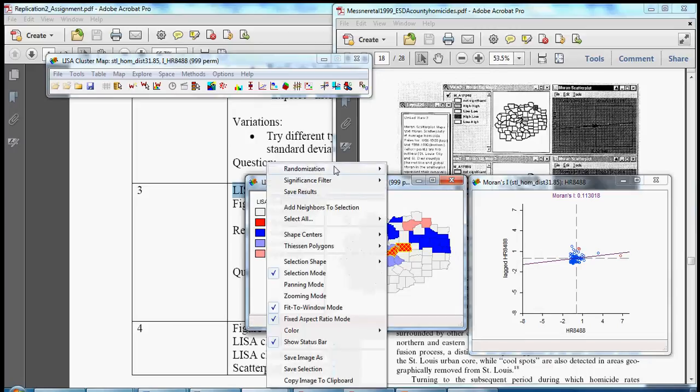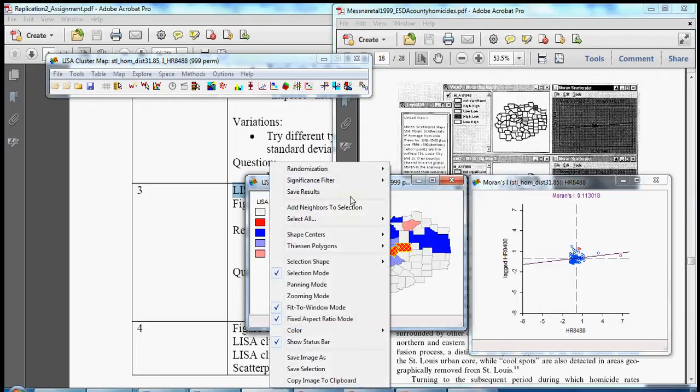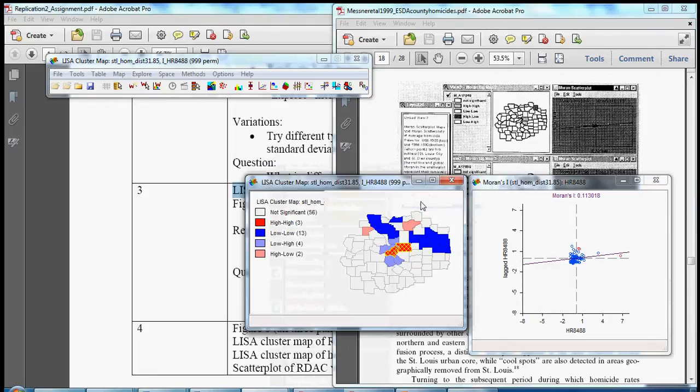If we did randomization again 999 times or a thousand times, just kept running this, it's conceivable that we might get slightly different results, but we're in the ballpark, just sort of glancing at a grayscale version of this map in Messner et al.